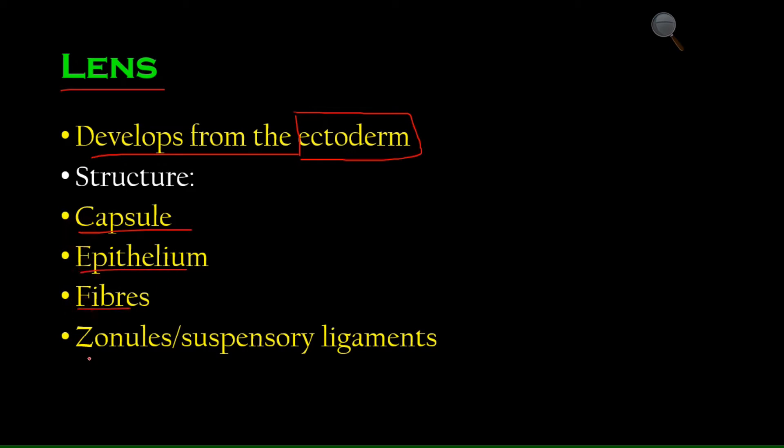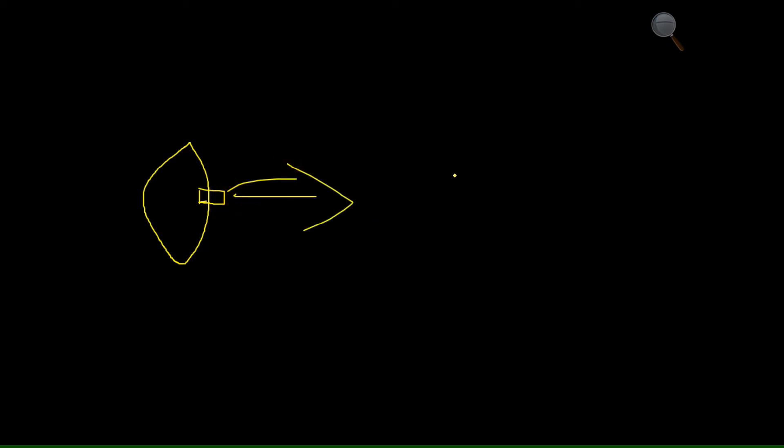Let's draw a diagram of the lens. It has an anterior side and a posterior side which is a bit more curved. The yellow outer covering you can think of as the capsule. If we zoom in on this capsule under a microscope, we can see that it is actually composed of epithelial cells, and these epithelial cells are towards the underside.